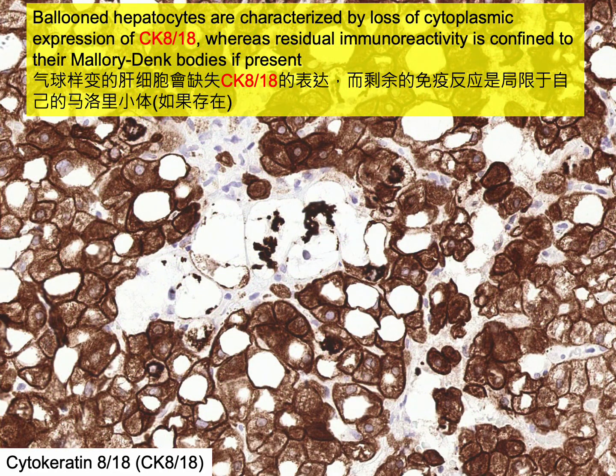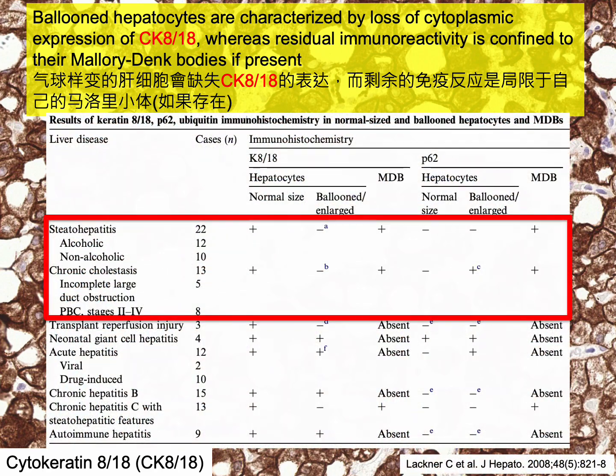Ballooned hepatocytes exhibit a loss of cytoplasmic expression of cytokeratin 8/18, with the remaining immunoreactivity confined to their Mallory-Denk bodies. This characteristic loss of CK8/18 expression is observed in ballooned hepatocytes across various conditions, including alcoholic and non-alcoholic steatohepatitis, chronic hepatitis C with concurrent steatohepatitic features, ischemia or reperfusion injury in liver allografts, and hepatocytes with feathery degeneration in chronic cholestatic diseases.